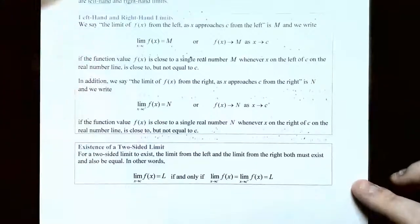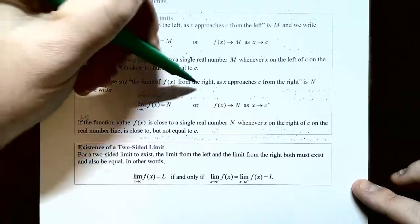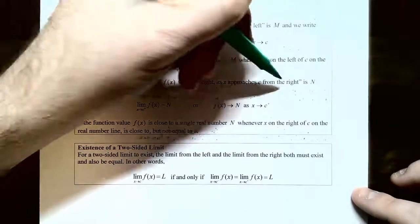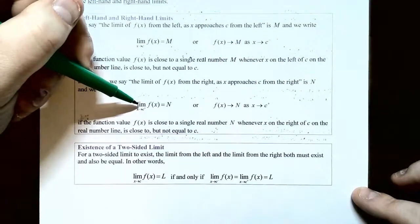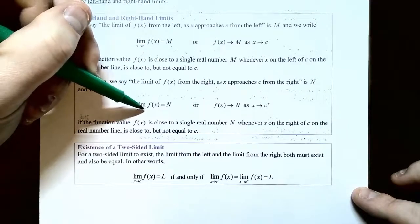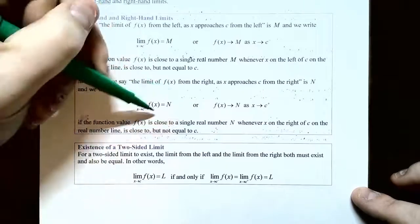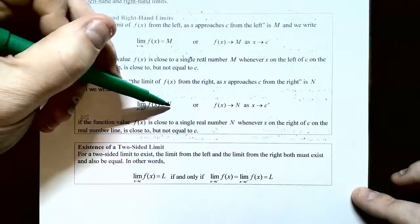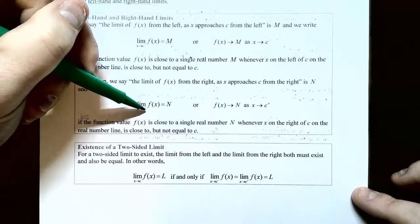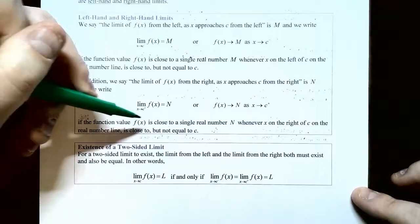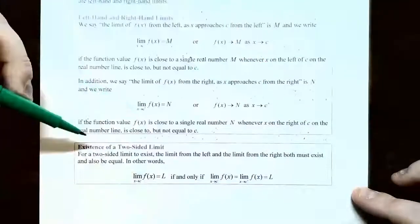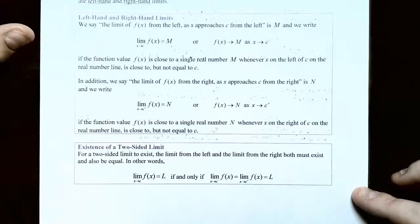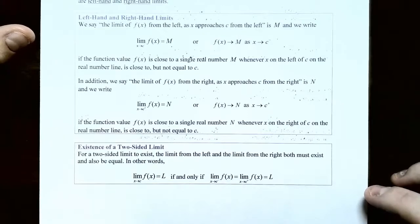In addition, you have what's called a right-hand limit: the limit of f of x as x approaches c from the right side is a real number n. We write it with a little plus sign superscript instead of a minus. The y values are getting close to n when the x values are getting close to c on the right side of x equals c, but again, not exactly at x equals c — we're interested in what's happening as you get close to x equals c from the right.